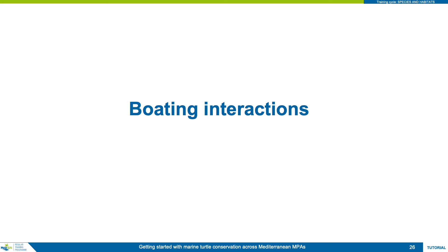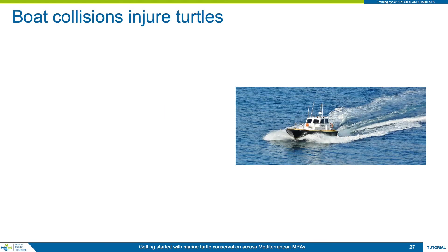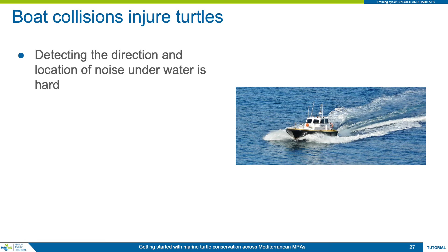Next, we will look at marine turtle interactions with boats in the form of collisions. Turtles are prone to collide with boats for several reasons. First, it is more difficult to determine the location and direction of noise underwater as sound travels about four times faster through water than air, leaving less time difference between the sound hitting both ears. Second, turtles generally move and react slowly to external stimuli and have not evolved the knowledge or ability to recognise the danger caused by speeding boats.